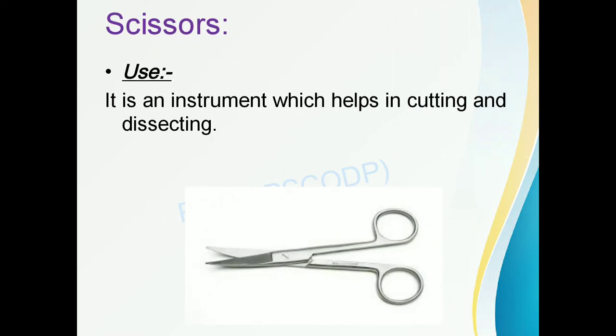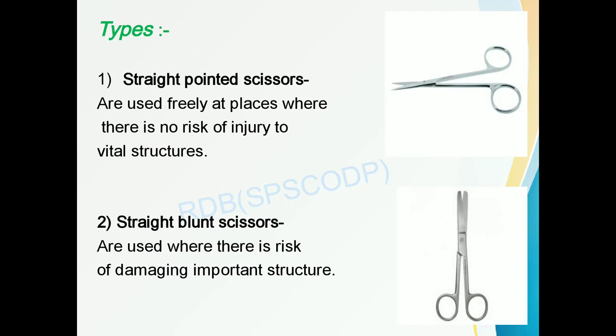The next instrument is scissors. It is a very common instrument used for cutting and dissecting. The first type is straight pointed scissors. They are used freely at places where there is no risk of injury to the vital structures.